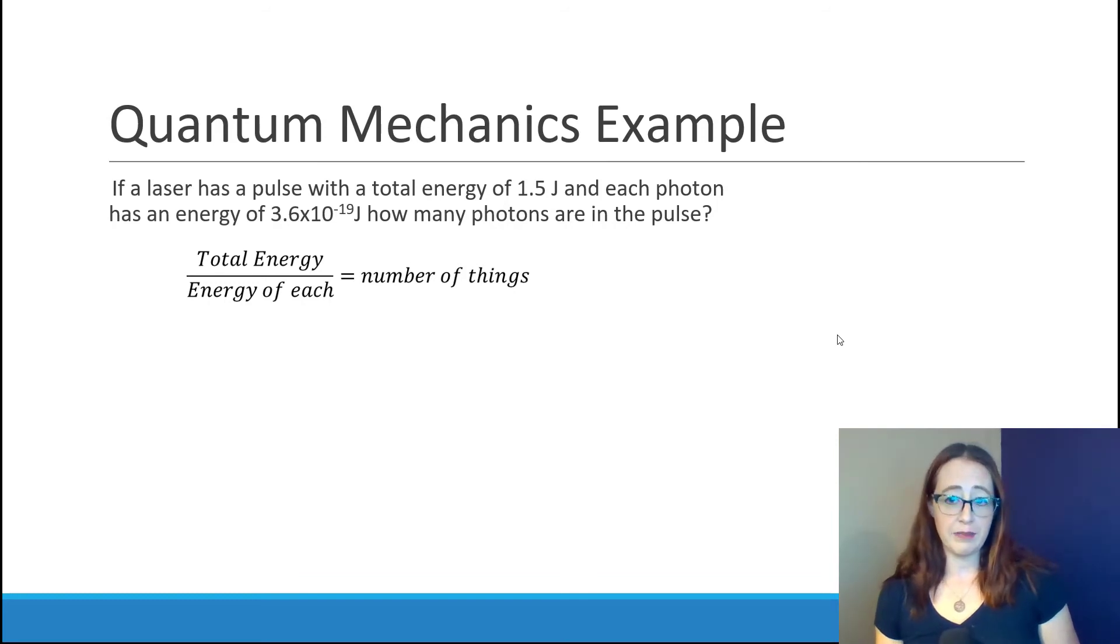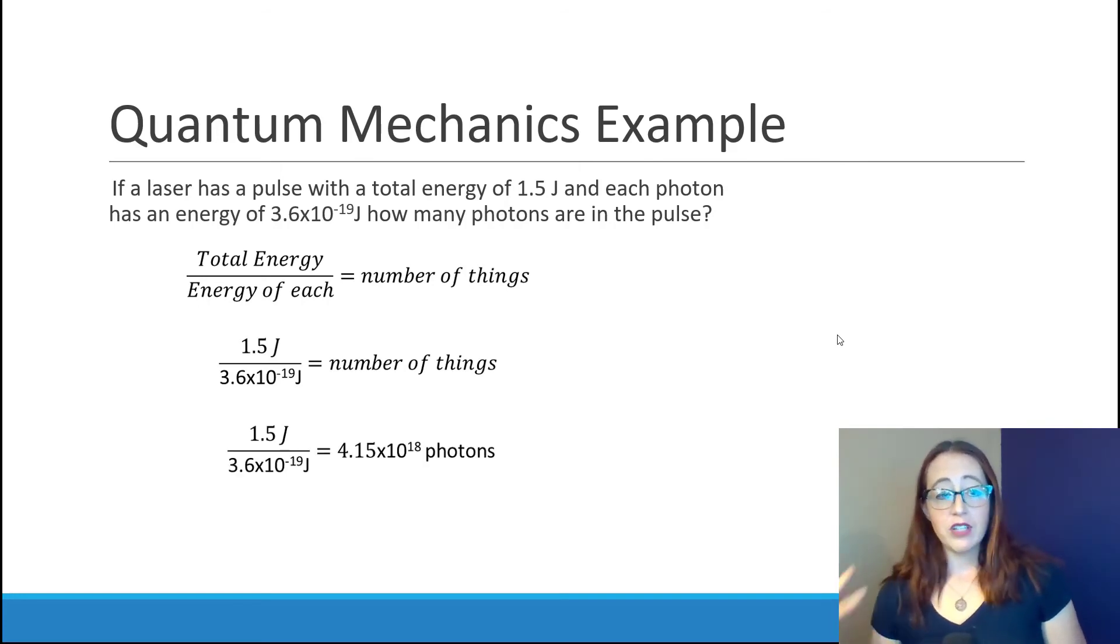Much like the candy example, we want to use our definition of division to solve for this. So we're going to take the amount of total energy and divide by the energy of each thing to solve for the number of species. In this case, photons. So we'll take our 1.5, our total energy, and divide it by our 3.6 times 10 to the negative 19th, or our energy of each photon. And this gives us our total number of photons.